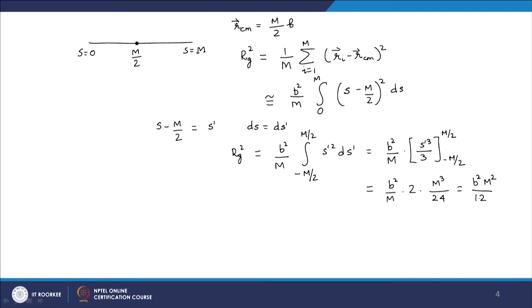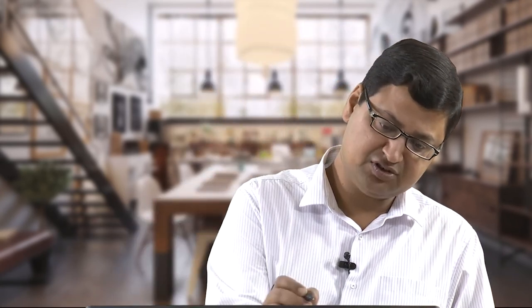Instead of Rg squared going like m (as for an ideal chain), it now goes like m squared, which is the behavior expected for a rod-like chain. Defining the rod length as L = m × b, we get Rg² = L²/12. This is a different kind of scaling compared to the ideal chain. The purpose was to demonstrate how to calculate the radius of gyration for different shapes — you can try discs, cylinders, and so on to understand how the volume occupied changes as a function of geometric variables.